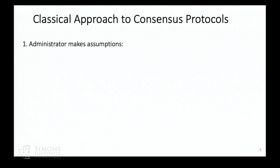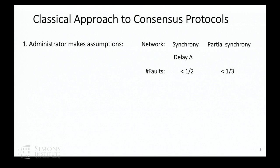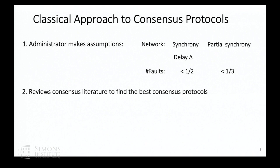With this in mind, let us see how classical consensus protocols are used today. There will be an administrator who makes some assumptions about the network — for example, a synchrony assumption or a partial synchrony assumption. He'll decide what the network delay delta is. There were many comments on what delta can be in the morning talk, and this is something the administrator must set ahead of time if using a synchronous protocol. He can also decide how many faults to tolerate — a minority corruption, one third, one fifth, and so on. Once he picks one set of parameters, he'll go to the consensus literature and try to find the best consensus protocol to use.